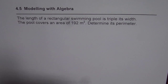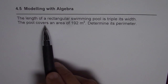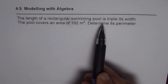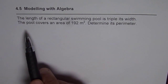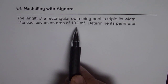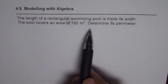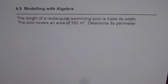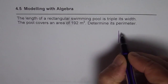Here we have a question which says the length of a rectangular swimming pool is triple its width. The pool covers an area of 192 square meters. Determine its perimeter. Whenever you have a question like this, it is a good idea to sketch and then understand the situation.